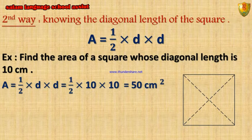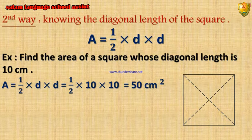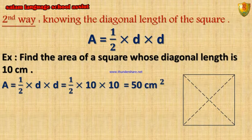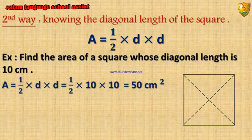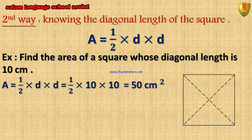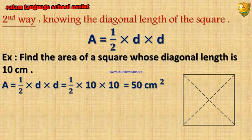The second way is by knowing the diagonal length of the square. Area equals half times diagonal times itself. Example: find the area of a square whose diagonal length is 10 cm. Area equals half times 10 times 10, equals 50 cm².